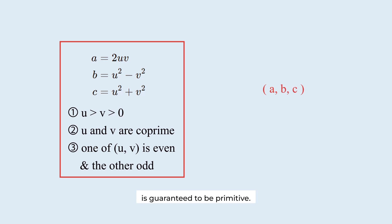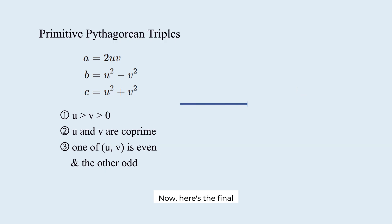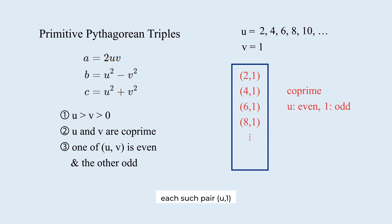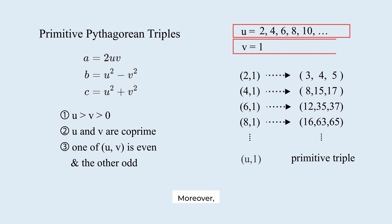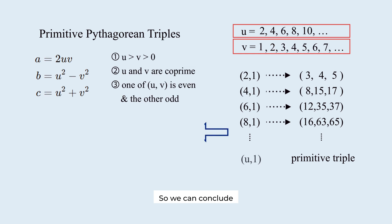Now, here's the final and critical point of the proof. Fix v equals 1. Then, we can take any even number as u. Since u and v are always coprime, and one is even and the other is odd, each such pair u comma 1 satisfies the three conditions. Each pair gives us a distinct primitive Pythagorean triple. There are infinitely many such u. Moreover, there are also infinitely many v that are greater than 1. So, we can conclude. There are infinitely many primitive Pythagorean triples. That completes the proof.